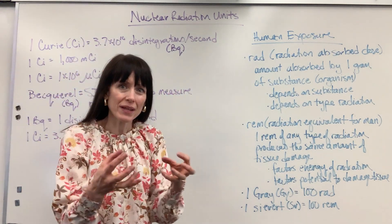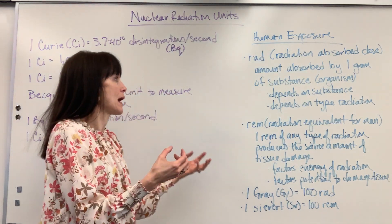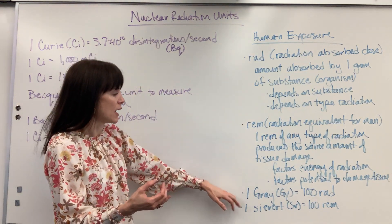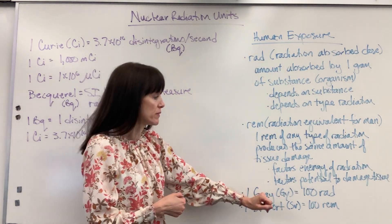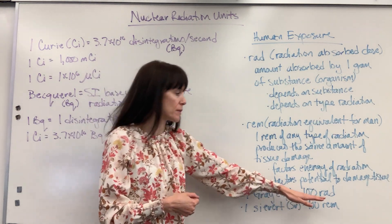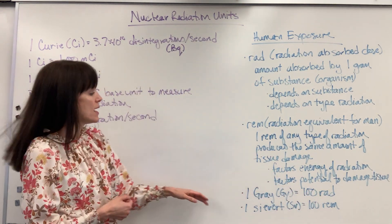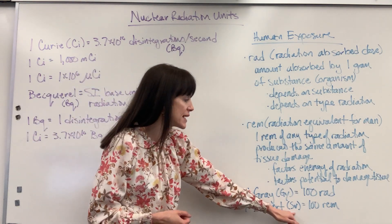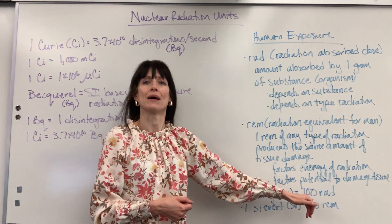Pulling some bigger numbers together for RAD and REM: one gray (abbreviation Gy) is 100 RAD — remember that can be for any living organism. And one sievert (abbreviation Sv) is 100 REM.